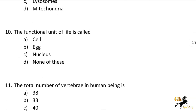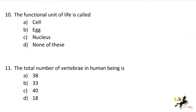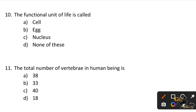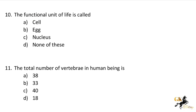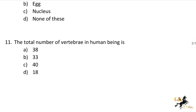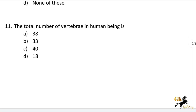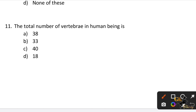Next question: The functional unit of life is called — The answer is Cell. Next question: The total number of vertebrae in the human being is — The answer is Option B: 33.